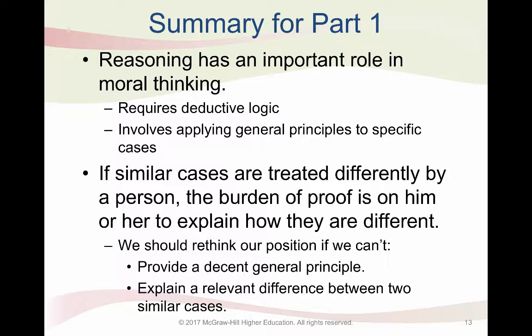So far, we've looked at how important moral reasoning is in our everyday lives — we use it all the time. It requires deductive logic and applies general moral principles to specific cases. We also use the two principles of moral reasoning. If we treat similar cases differently, the burden of proof is on us to explain how they're different. Sometimes that's difficult because our perceived differences are based on things like stereotypes. If we can't prove that the differences are significant, we might need to rethink our positions. This is the end of Part 1. Please move on to Part 2.